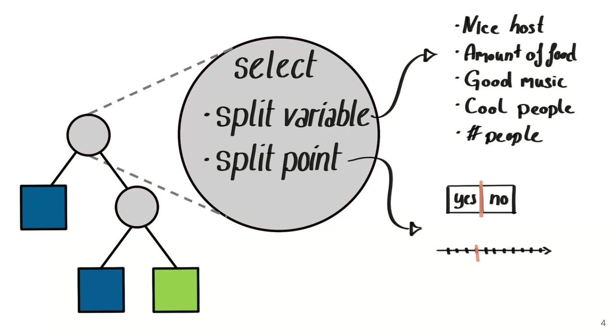Now the big question in trees is how do we actually select the two: the split variable and the split point.